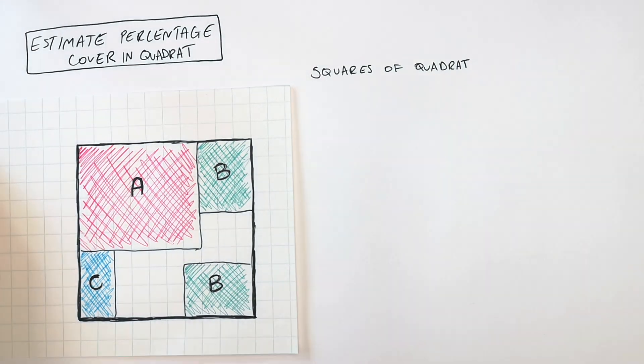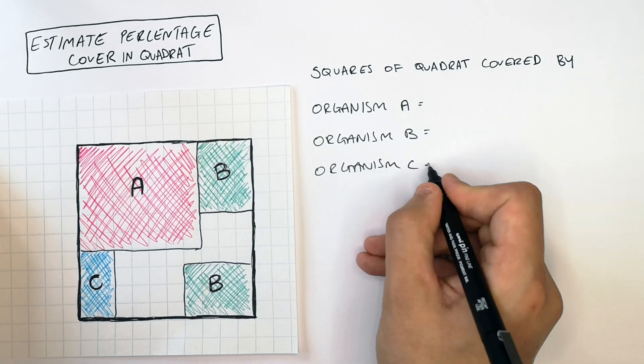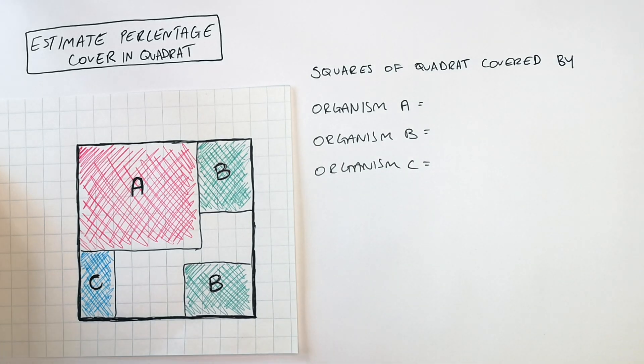So within this quadrat there are three organisms A, B and C that we have identified within the quadrat.